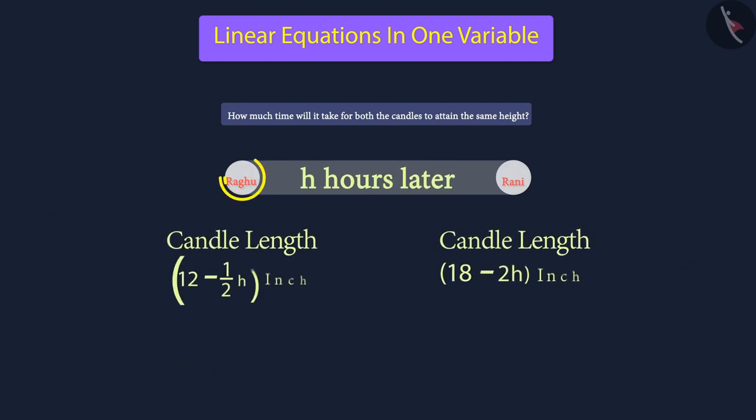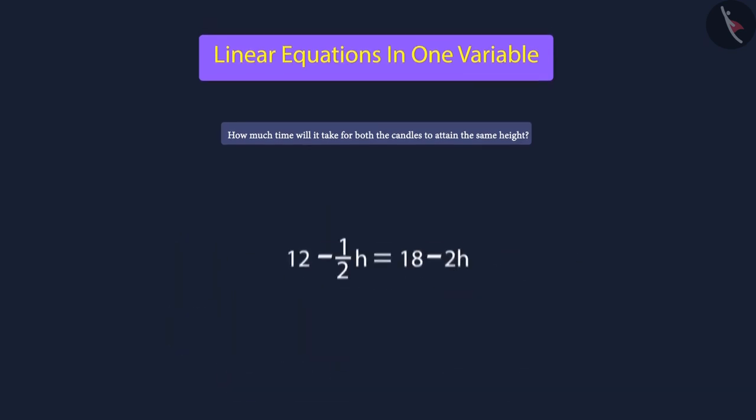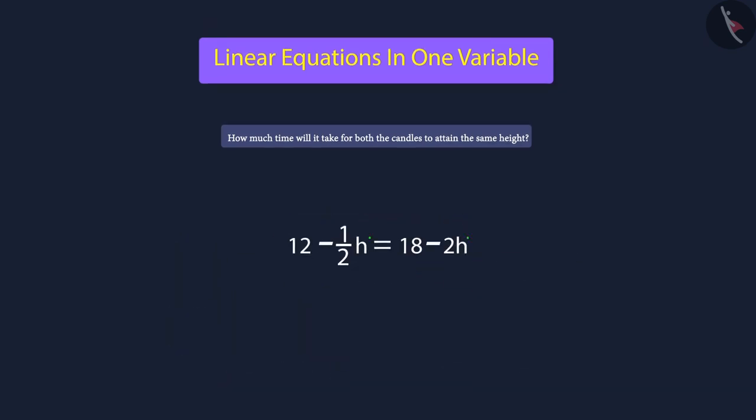Now, we have an expression for the length of the candles for both Raghu and Rani after h hours. Further, we must find the value of h for which both candles will have the same length. Thus, the values of the two expressions will be the same. So, this is our linear equation in h variable.